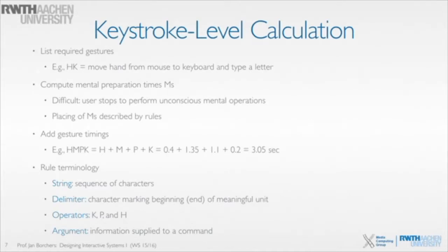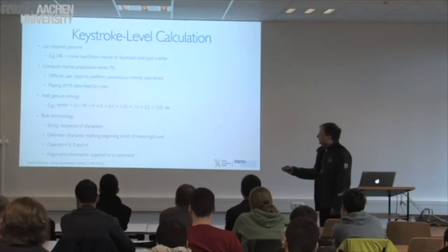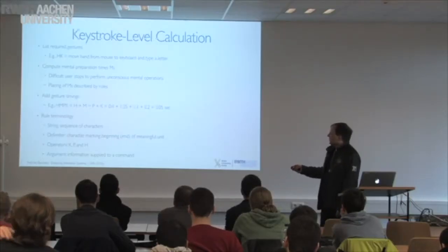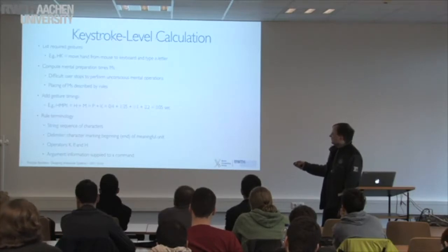Note that these M's are not thinking pauses for creative work like composing a thesis title — we are talking about routine tasks people do as fast as they can. You then add the timings. For example, an interaction consisting of a homing operation, then a mental preparation moment, then a point and click: H plus M plus P plus K adds up to 3.05 seconds, giving you a rough idea of how long that sequence takes.